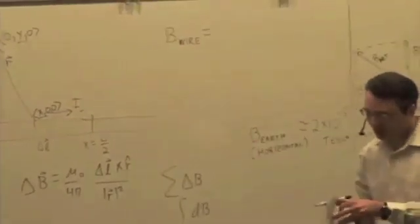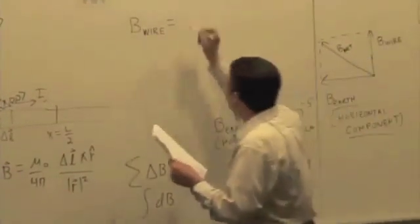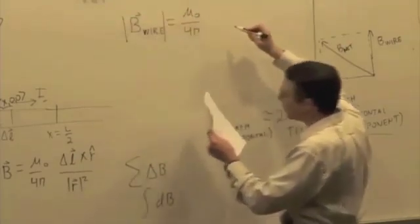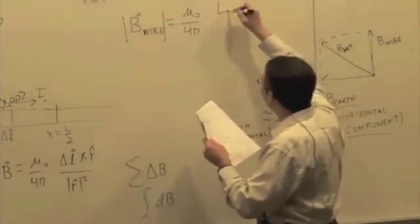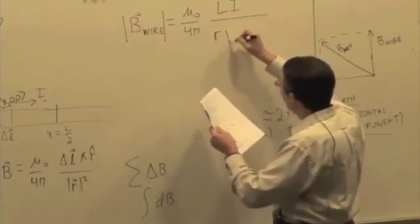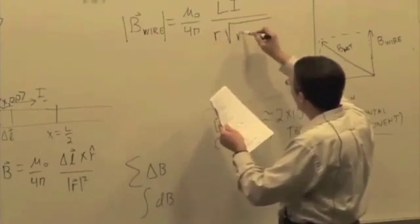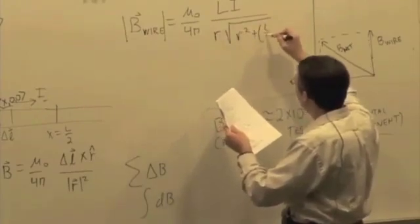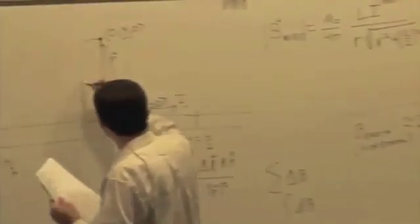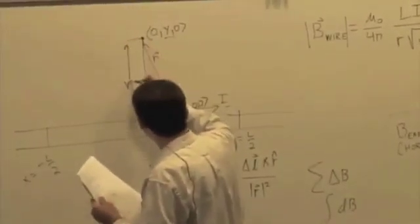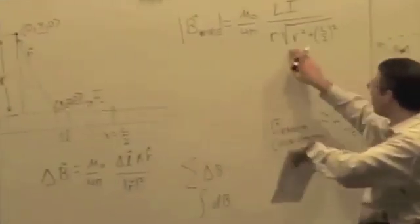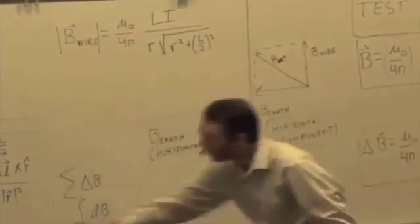The result is mu naught over 4 pi, and this is just a magnitude now, not a direction. Mu naught over 4 pi, capital L times I over R times square root of R squared plus L over 2 squared, where I'm really now calling this distance R, just like we have done in the past. I'm changing the name of that Y to R, meaning the perpendicular distance away from the current.